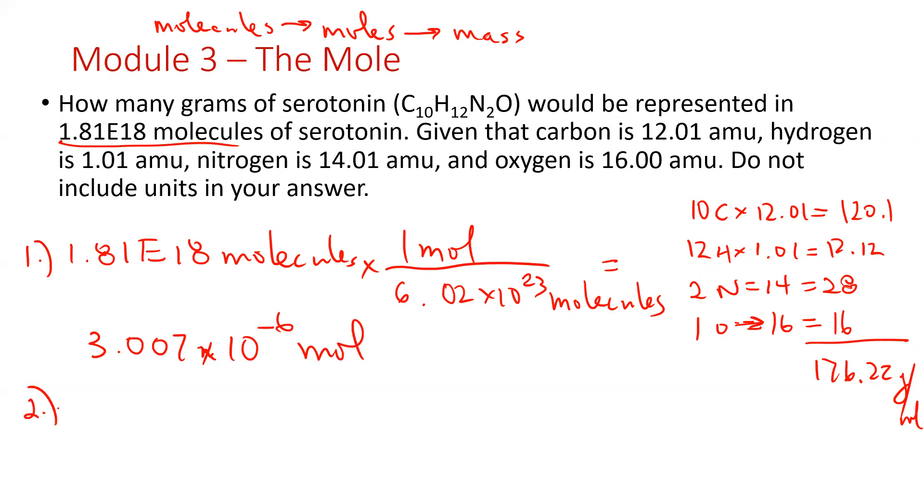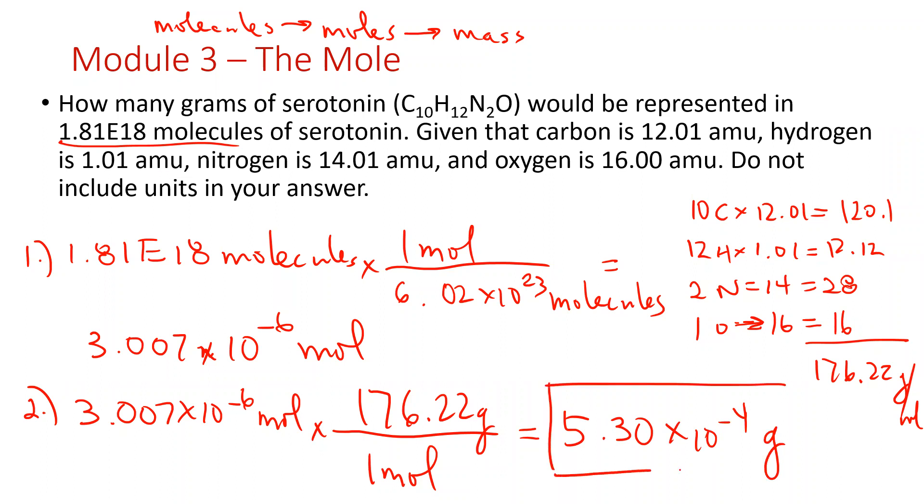Step two, now we can bring in our molar mass. I've got 3.007×10^-6 moles of serotonin. My molar mass tells me for every one mole of serotonin, I have 176.22 grams. So we multiply by the molar mass, times 176.22, and we get approximately 5.30×10^-4 grams of serotonin.